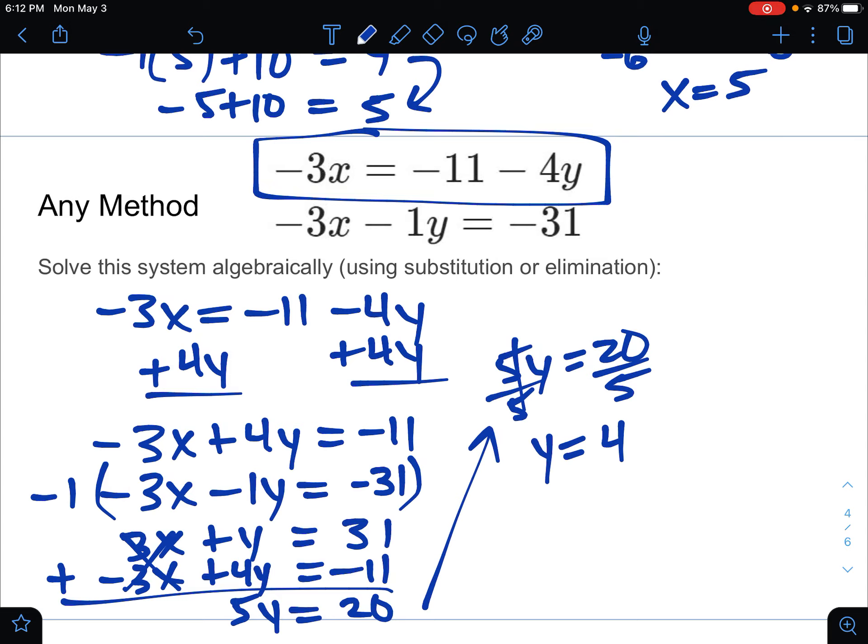Then next, we're just going to find x. So plug back into either equation. I'm going to use the top one. So negative 3x equals negative 11 minus 4 times 4. So negative 3x equals negative 11 minus 16. Negative 3x is going to equal negative 27. Divided both sides by negative 3.